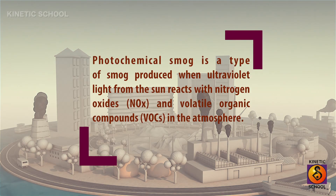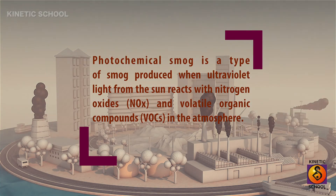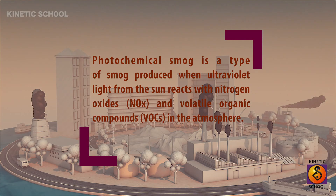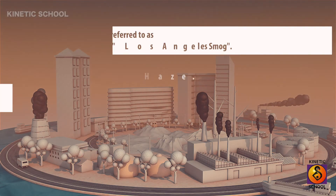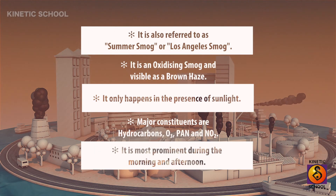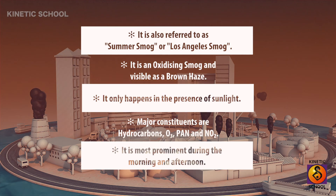Photochemical smog is a type of smog produced when ultraviolet light from the sun reacts with nitrogen oxides and volatile organic compounds in the atmosphere. It is also referred to as summer smog or Los Angeles smog, and is an oxidizing smog visible as a brown haze.